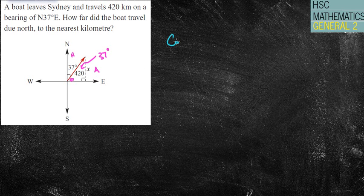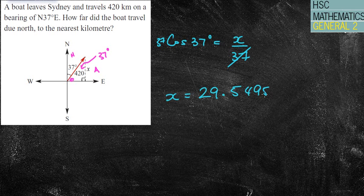So adjacent over hypotenuse is cos. So cos 37 degrees equals my adjacent over my hypotenuse. I'm going to times the 420 across. And then simply put that in my calculator, 420 times cos 37. And it says to nearest kilometer. So X equals 335.495. X equals 335 kilometers.